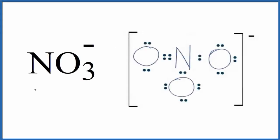Let's take a look at the number of lone pairs for NO3-. This is the nitrate ion. Here's our Lewis structure for the nitrate ion.